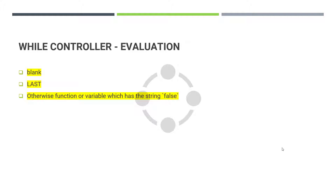With a blank value, whenever you enter no condition inside the While Controller, it will execute until the last sampler inside the While Controller has failed. Suppose you have 10 elements and the 10th element is failing — then only it will terminate the while condition.